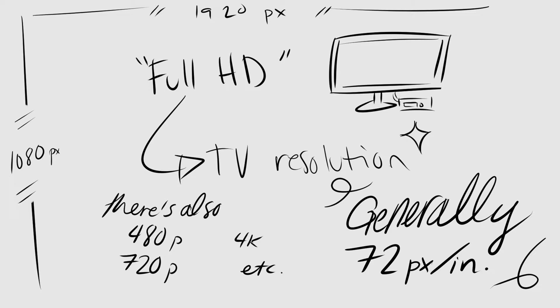To get started, let's talk about digital drawing resolutions. When you're working on something that's going to be on the internet or just shared on a computer, 72 pixels per inch is generally the right resolution to go for. This right here is 1920 pixels wide by 1080 pixels tall, which is generally referred to as Full HD. There's also 480 pixels, 720, 4K, and so on — these are generally best for digital viewing of images.